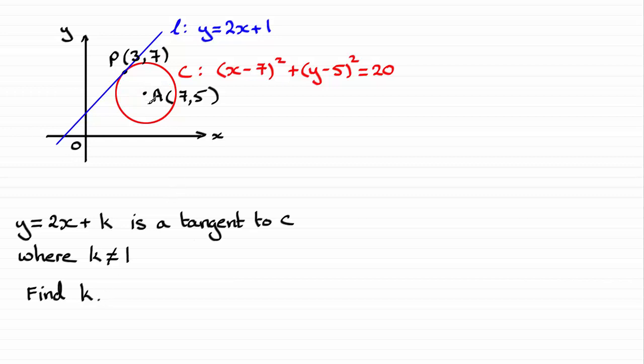Well, clearly it's not this tangent because that will be when k equals 1, but because it has the same form as this line here, it's got the same gradient. It must be a parallel line to the line L.